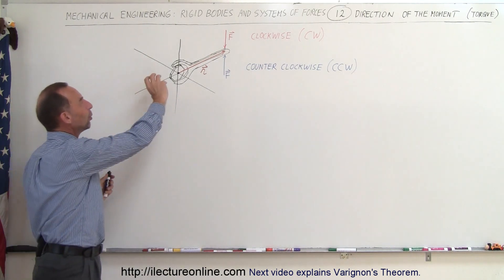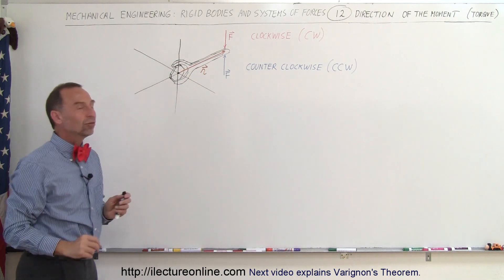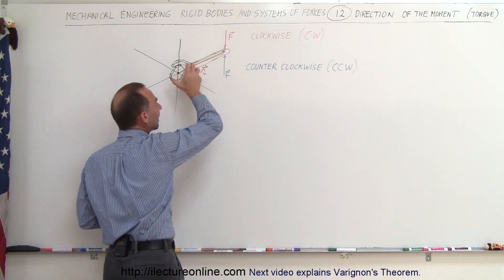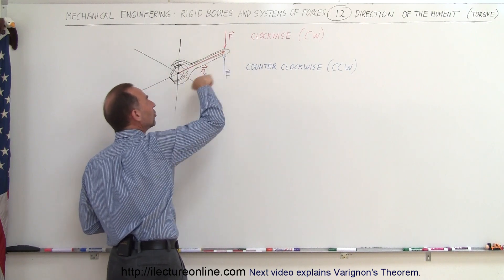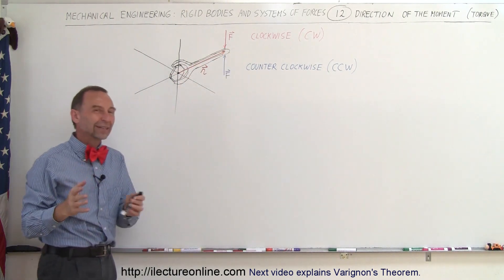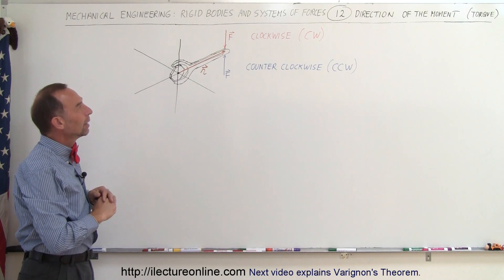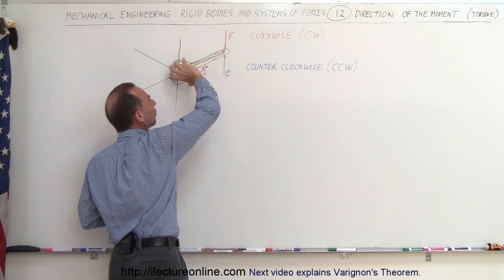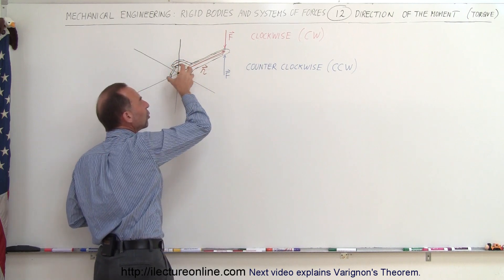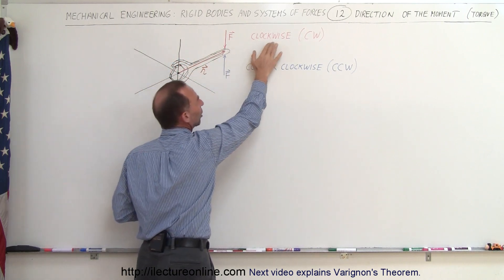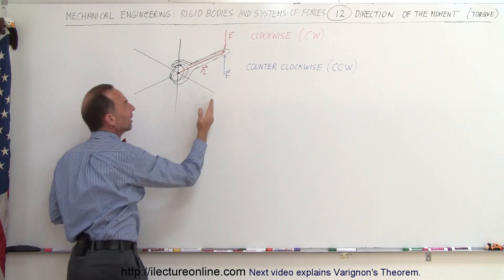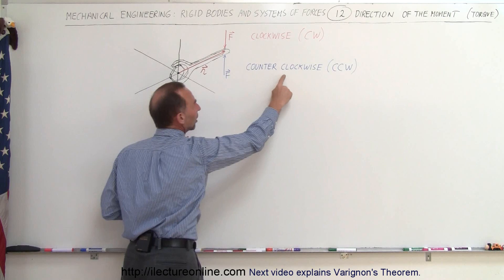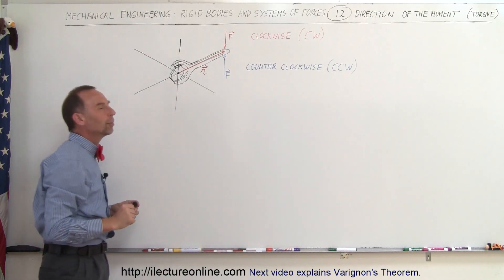Imagine that we have a bolt that needs to be tightened or loosened with a wrench. If you push down on it like this, we tighten the bolt; if we push against it like this, we loosen the bolt. When we push on the wrench this way, we make a clockwise motion on the bolt — CW for clockwise. If you push against the wrench like this, we do a counterclockwise motion on the bolt — CCW.